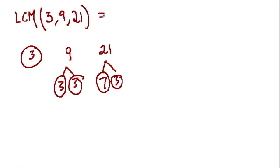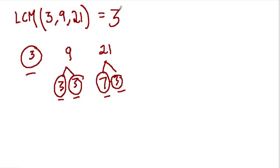The least common multiple — as we said in the last video — comes from the prime factors of your numbers. For 3s, we know in each case we need at least one 3. But one 3 is not enough, because in the number 9 we need two 3s. So our least common multiple has to at least make the number 9, meaning we have to have 3 squared.